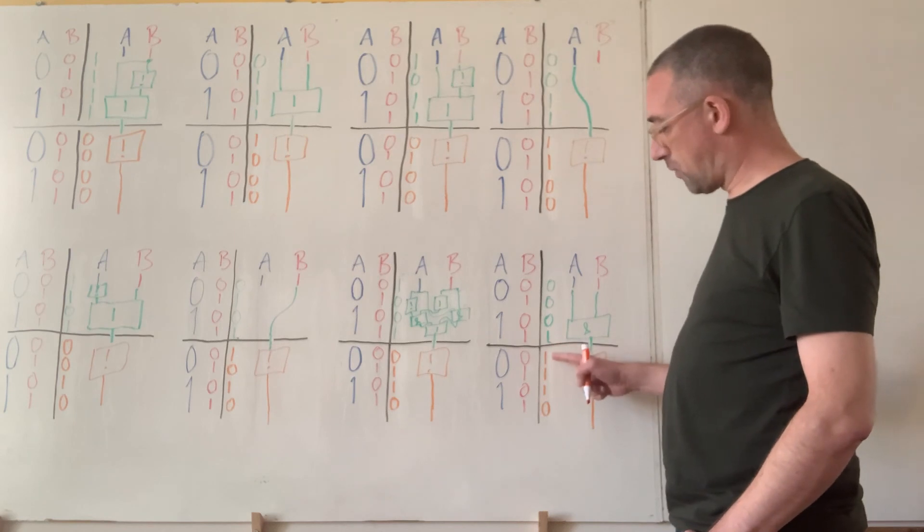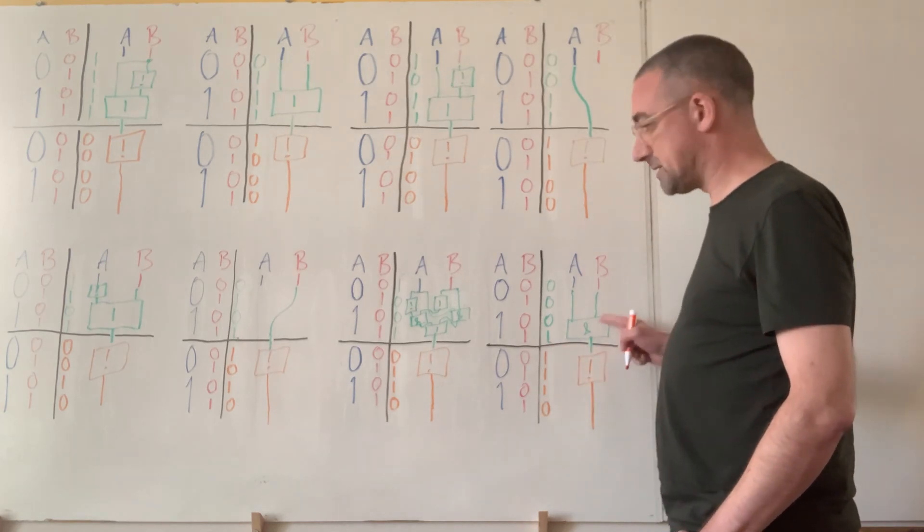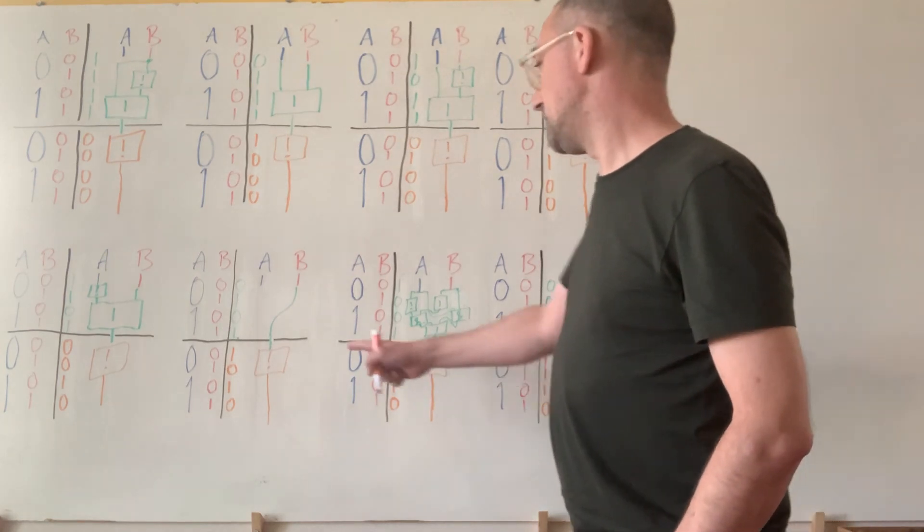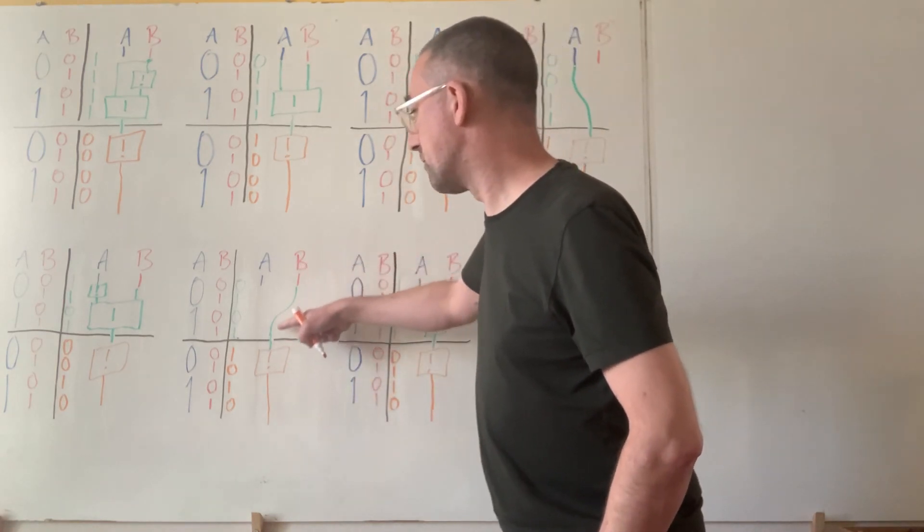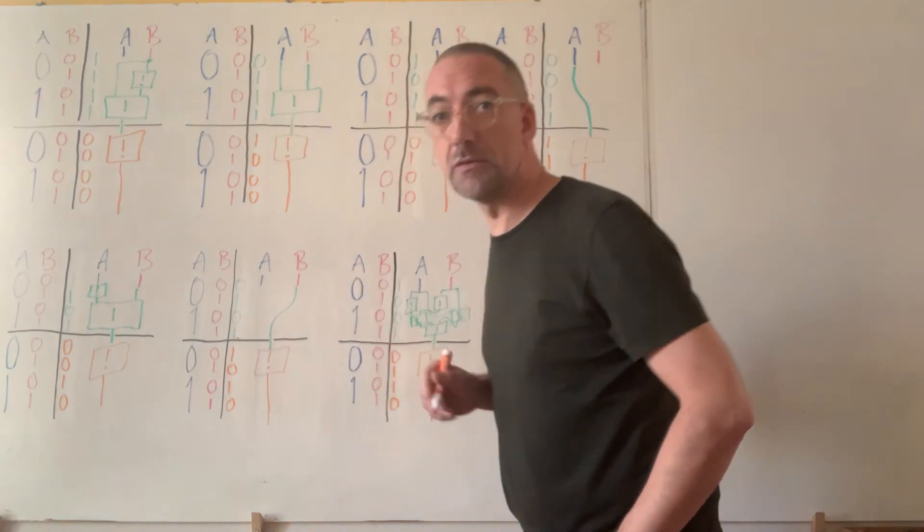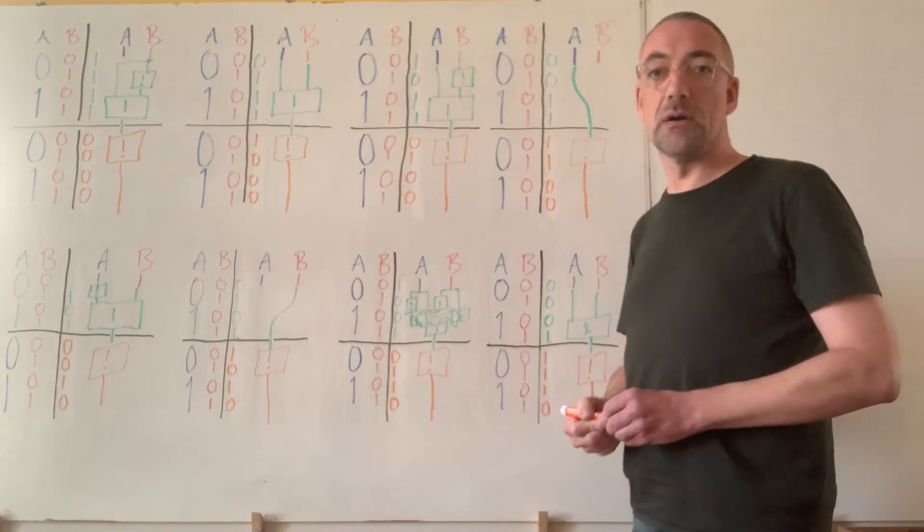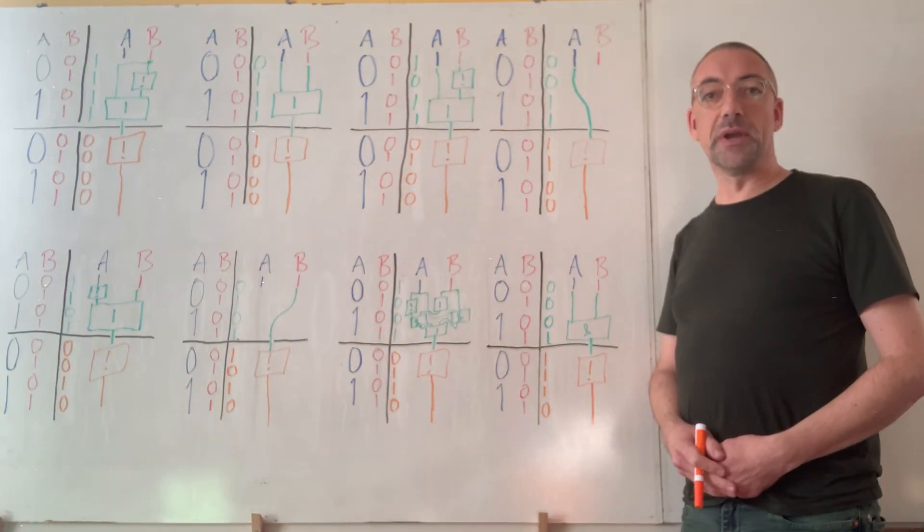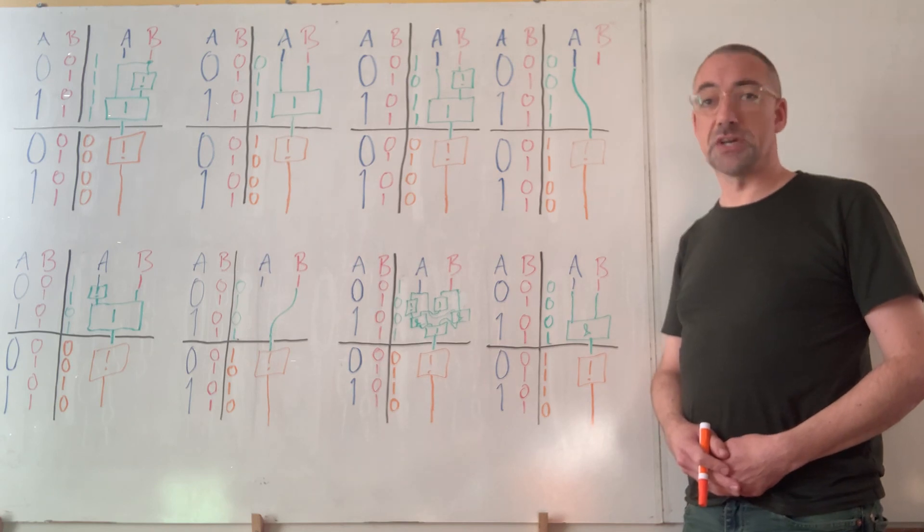So for example here where we have 1, 1, 1, 0, that's negated AND. And here where we previously had just a wire from B, we have exactly not B in the orange circuit. So there we are, 16 gates but we only made 8. To get the other 8 we just had to negate.